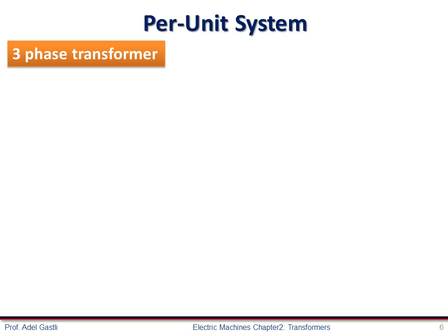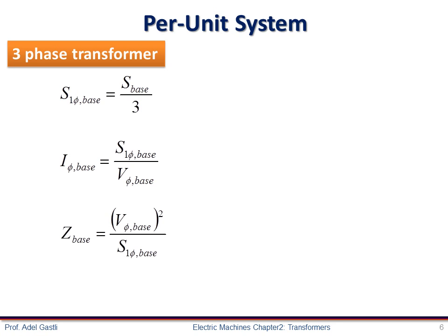For the case of three phase system, the single phase base power is equal to the three phase base power divided by 3. We know that the single phase base current is the ratio of the single phase base power over the phase voltage. And we know also that the base impedance is the ratio of the square of the base phase voltage over the single phase base power.